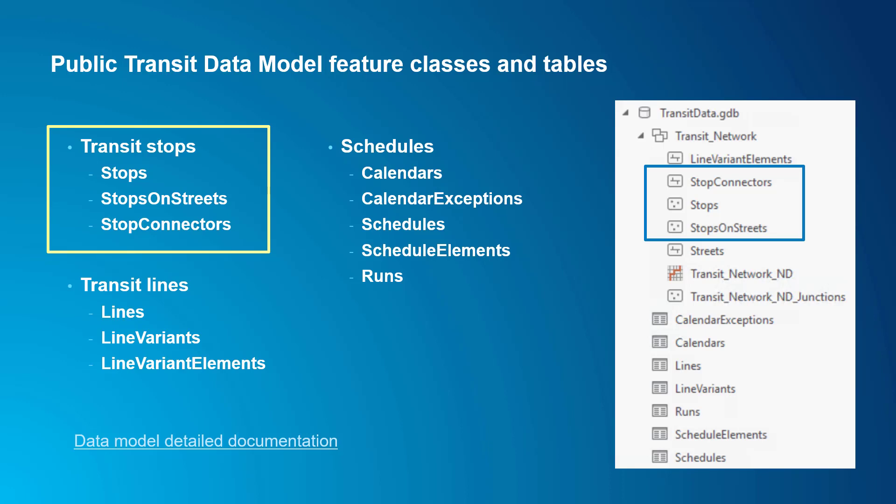Stops on streets and stop connectors are used to relate the location of stops to the location of street features and maintain proper connectivity when building a network dataset. This helps you model pedestrians traveling by public transit and ensures that pedestrians can only transition between the streets and the transit lines at designated stop locations. Typically, the stop locations are offset a little from the street center lines, which makes it easier to model connectivity. Stops on streets is a copy of the stops snapped to the nearest street location, and stop connectors is a line feature class providing a little connector between the stop location and where it snapped to the streets. You can use these little connectors to model a time delay for boarding or exiting transit vehicles and walking through large stations.